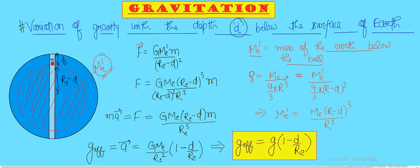So if we solve this, I get M_e dash equals M_e times (r_e minus d) whole cube upon r_e cube. So this we will substitute right here to calculate force due to this region on this ball.